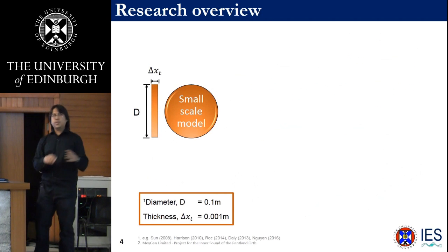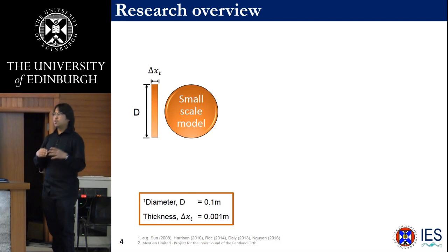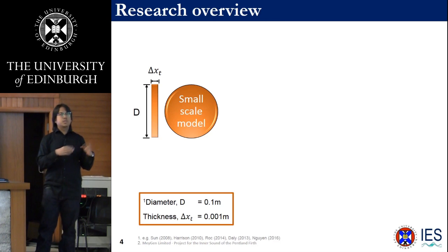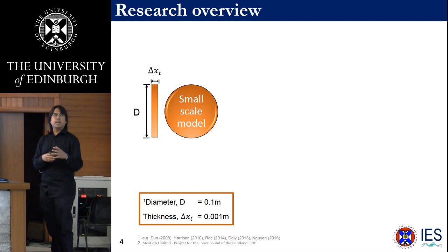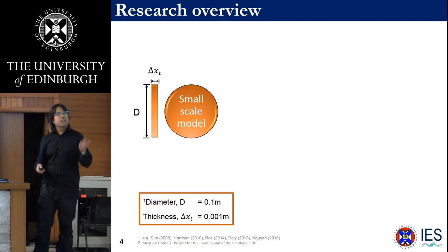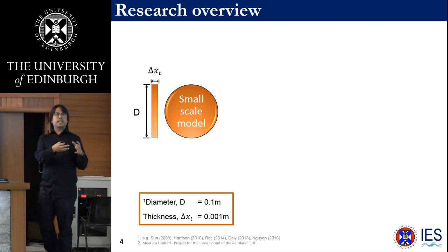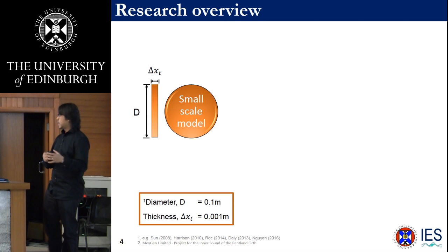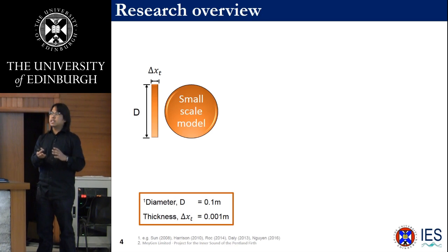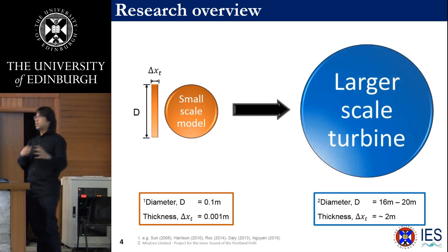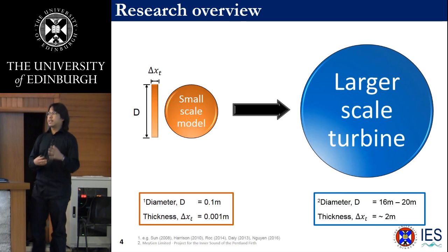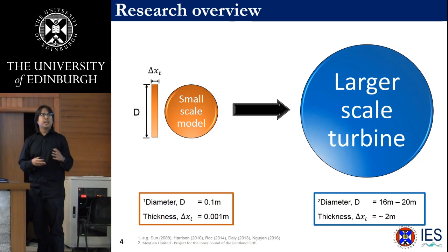The actuator concept has been widely used to compute wake decay for tidal turbines. However, most of these studies using the actuator disk involve a very small-scale domain — for example, the diameter in most listed studies was about 0.1 meter. The problem with small-scale studies is that essential parameters such as mesh density and number of vertical layers cannot be replicated in a larger-scale domain. My motivation is therefore to model a full-scale tidal turbine with a diameter of about 20 meters using the actuator disk concept.